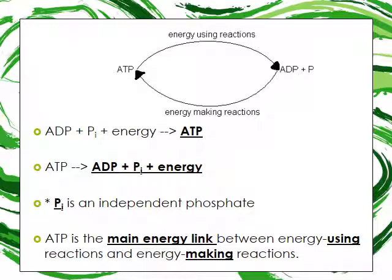In formula form: ADP plus a phosphate, using energy, gives us ATP — that's the energy-making reaction. To break down ATP, we start with ATP, release energy, and end up with ADP plus an independent phosphate. ATP is the main energy link between energy-using reactions and energy-making reactions — ATP is our energy currency.